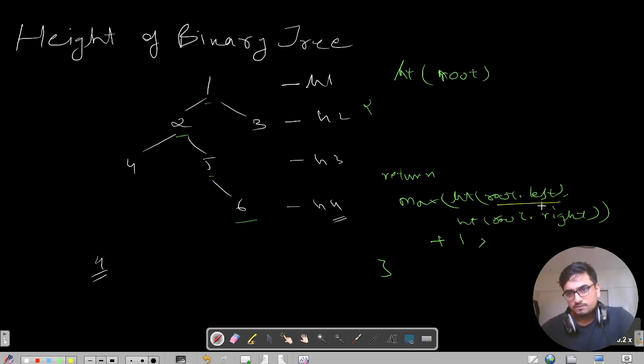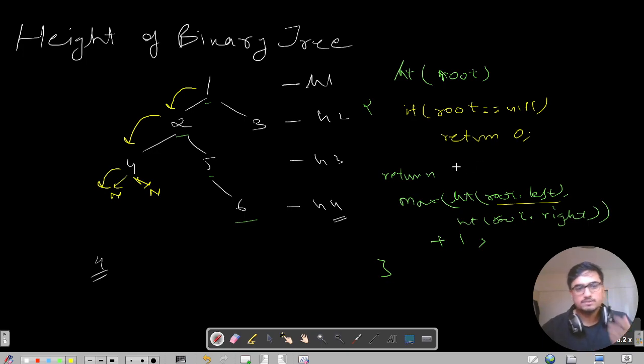So height of root.left, right? So from one, where will I go? I will go to two. From two, where will I go? I will again go to four. From four, I will go again left. But I can see that the child here is null. Both the children are null. So that means I need to write a base case here that if root equals equals to null, then what we need to do? We need to return zero, because there is no node ahead, there is no height ahead, there is no node ahead. So it doesn't make sense to create height, right? So what will return here? Let us use a different color. So here will return zero.